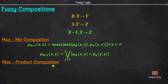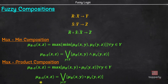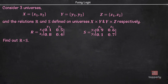Next is the Max-Product Composition. It is defined as: Mu(R∘S)(x, z) = maximum over all y of the product of Mu_R(x, y) multiplied by Mu_S(y, z), for all y belonging to Universe Y. This can be shorthanded as Mu(R∘S)(x, z) = union of Mu_R(x, y) multiplied by Mu_S(y, z).